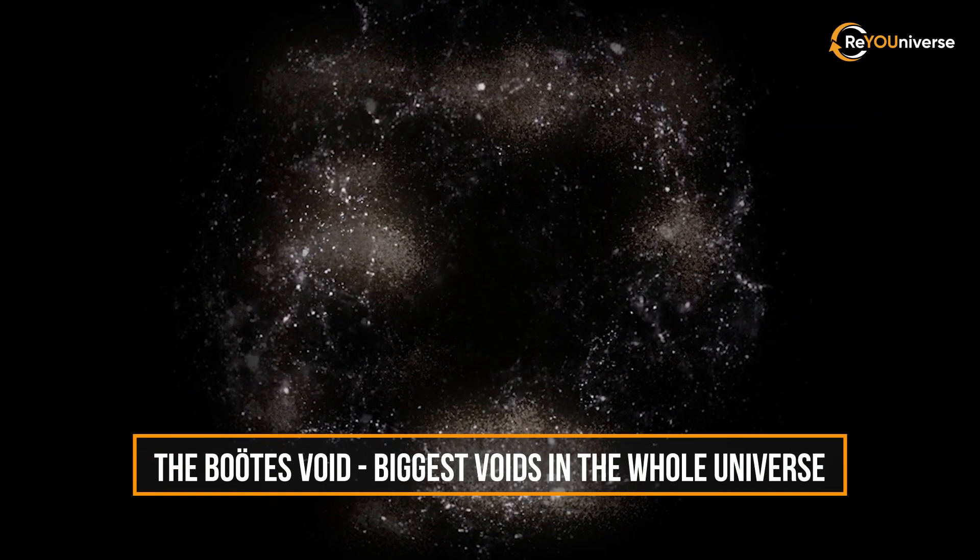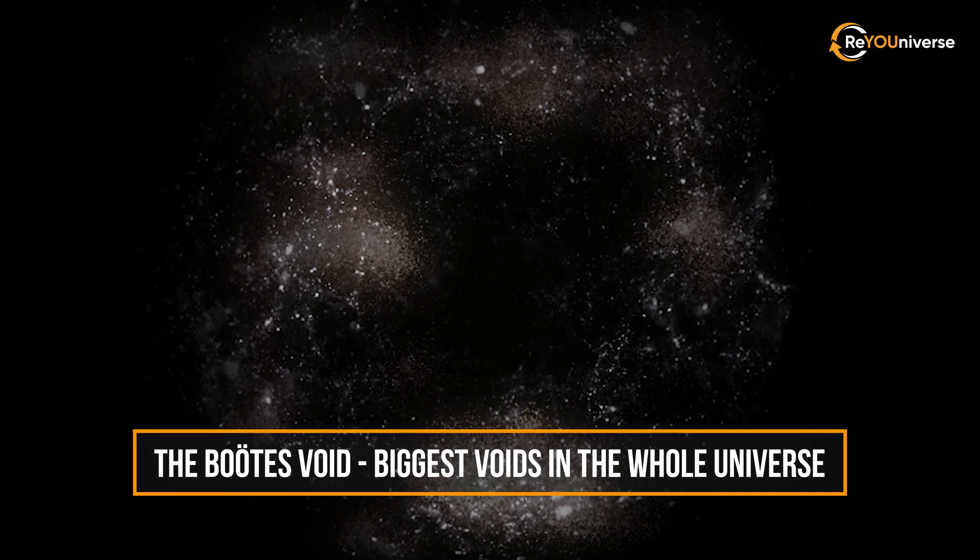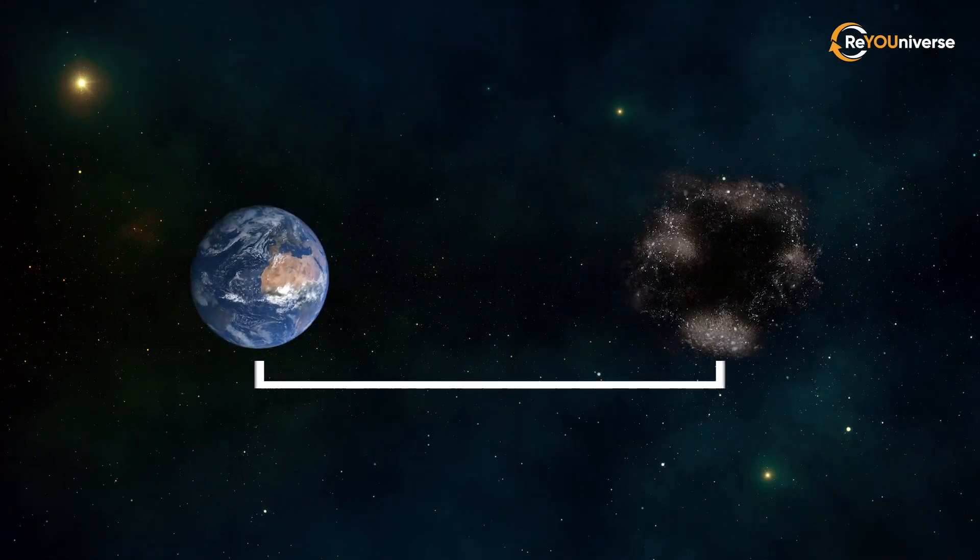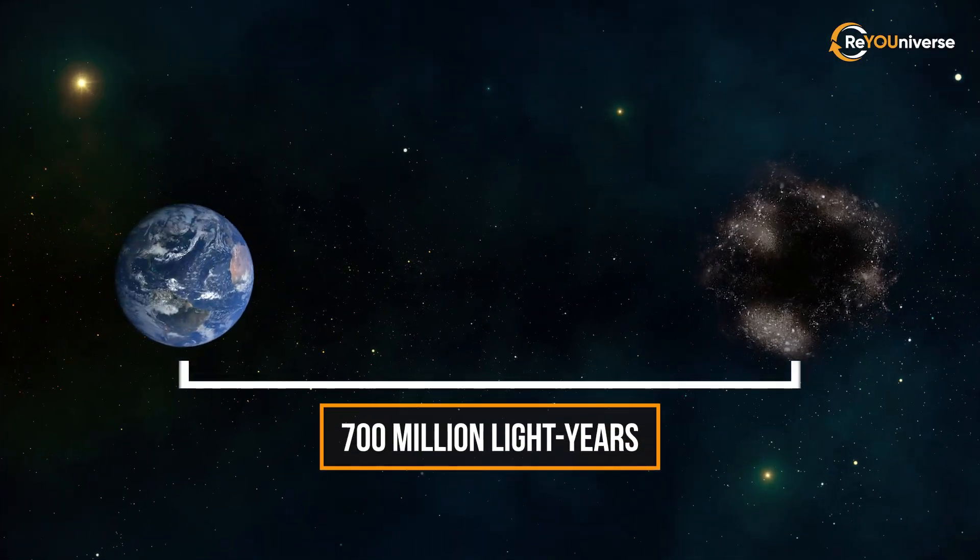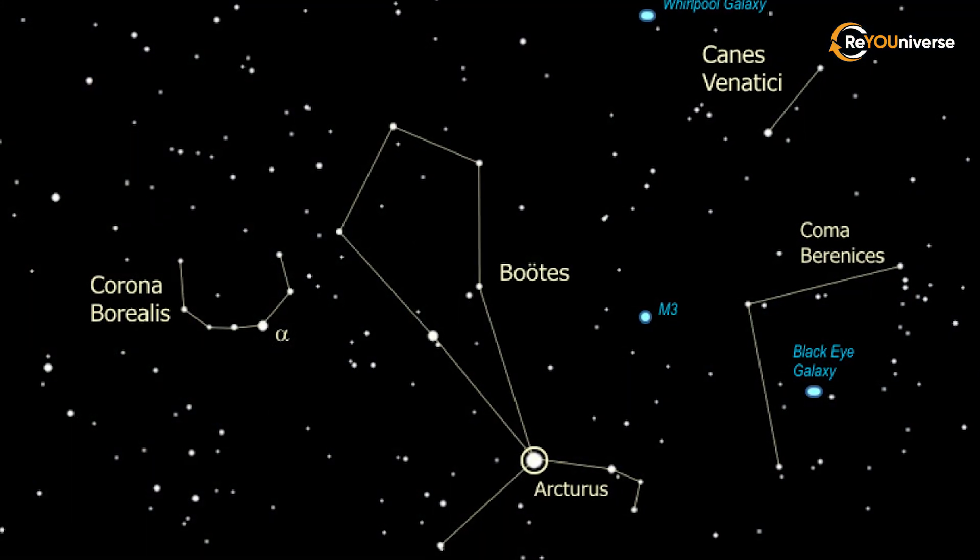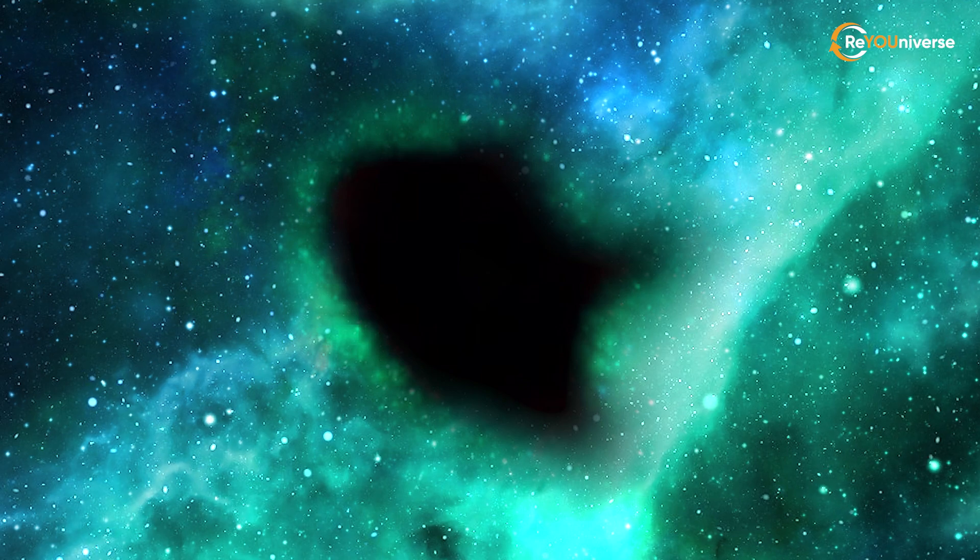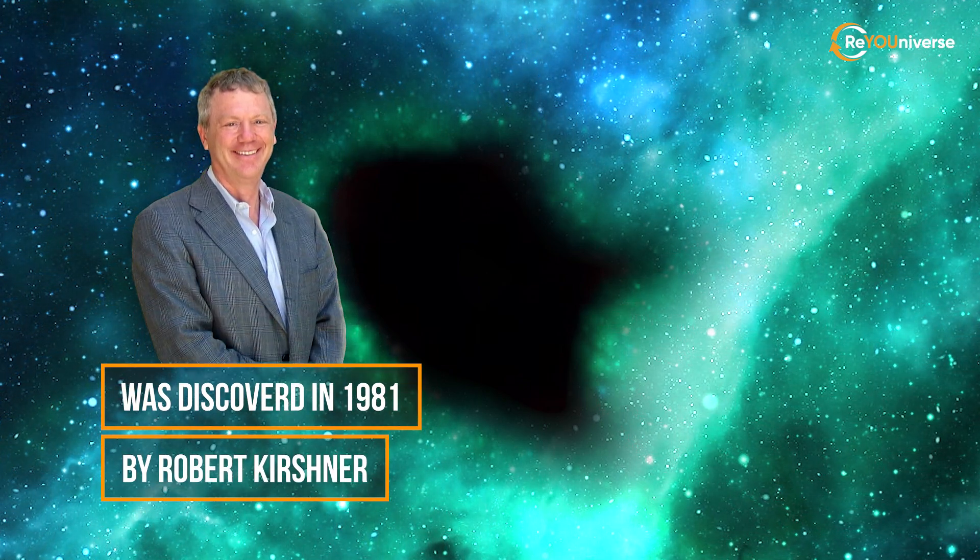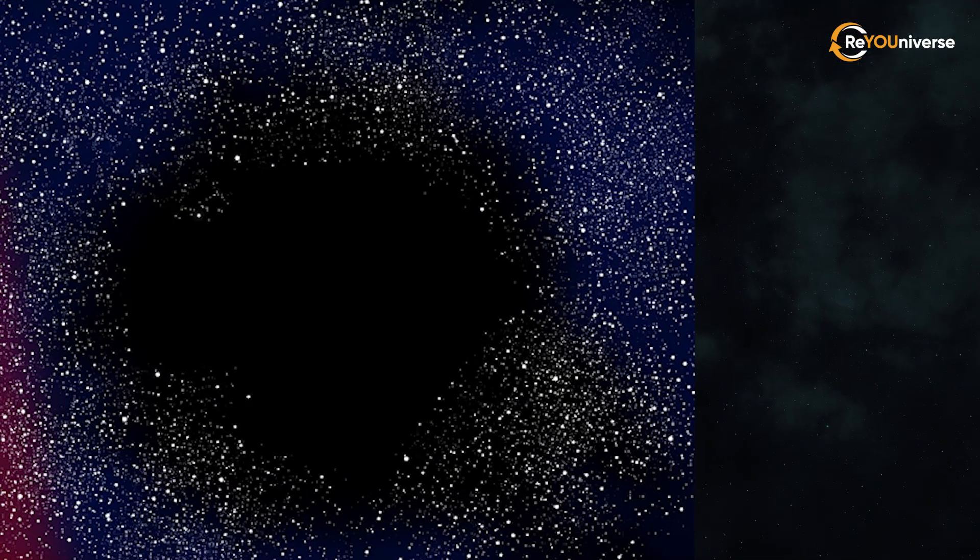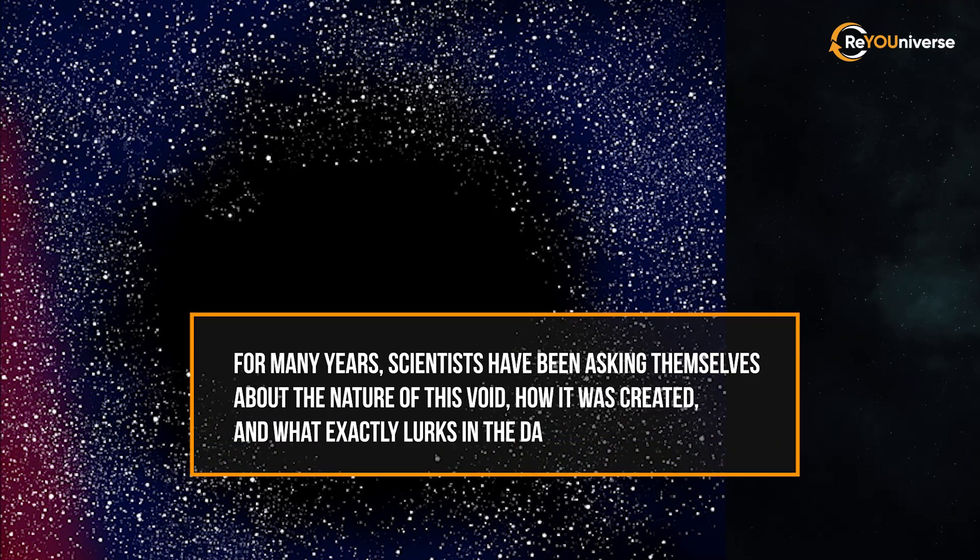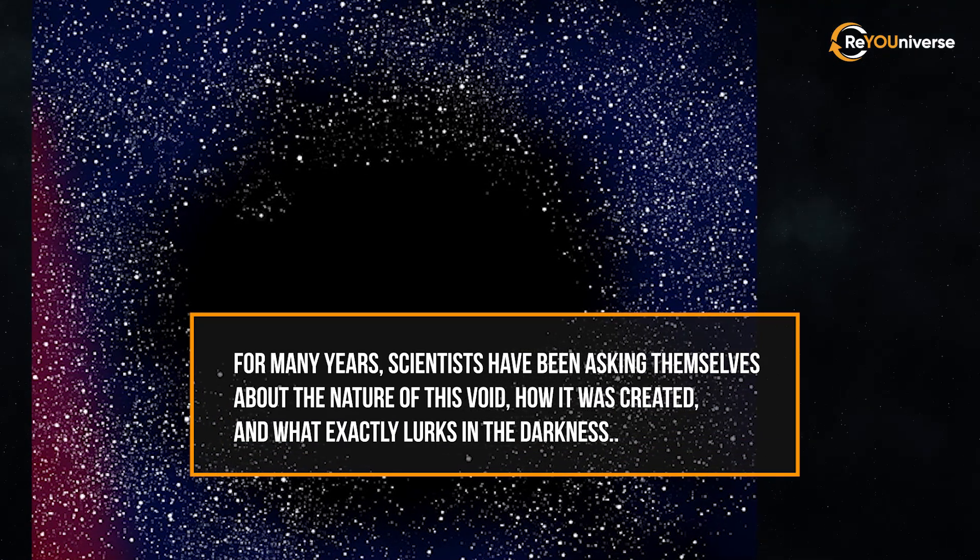The Boötes Void is one of the biggest voids in the whole universe. It is located 700 million light-years away from our planet, near the Boötes constellation from which it borrowed its name. The Great Void was discovered in 1981 by Robert Kirshner and his team. For many years, scientists have been asking themselves about the nature of this void.